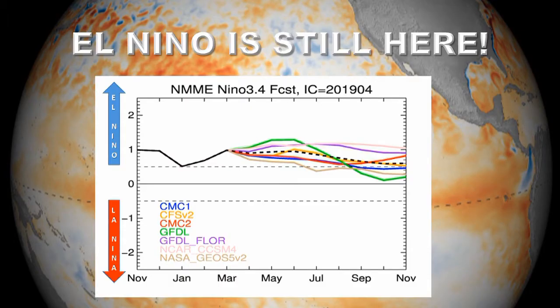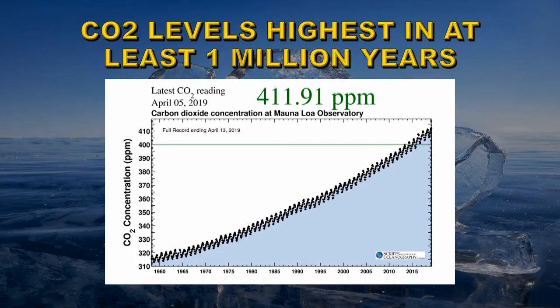Let's take a look at El Niño — it's still operative. Anything with an index above 0.5 is considered El Niño, and we're well above 1. The models show that this will continue at least until July and possibly through to the end of the year. Meanwhile, carbon dioxide levels in the atmosphere have reached their highest level in the last million years, and possibly as long as the last 30 million years. We're currently at 411.91 parts per million.